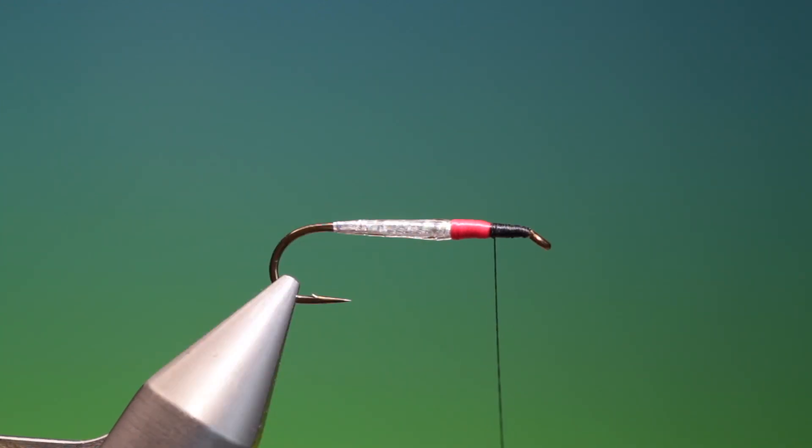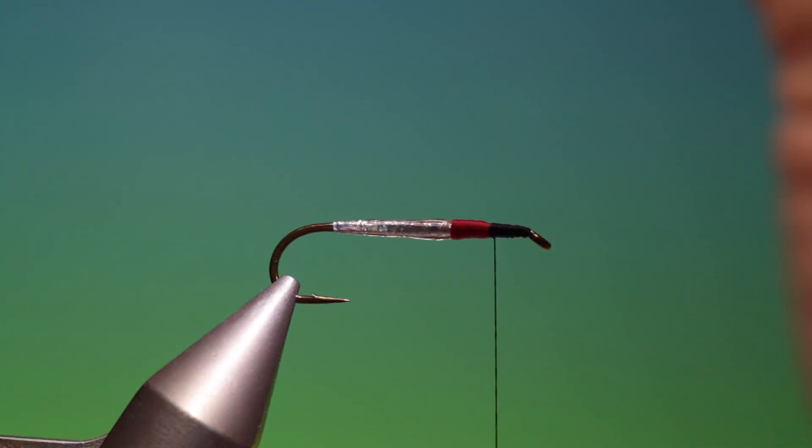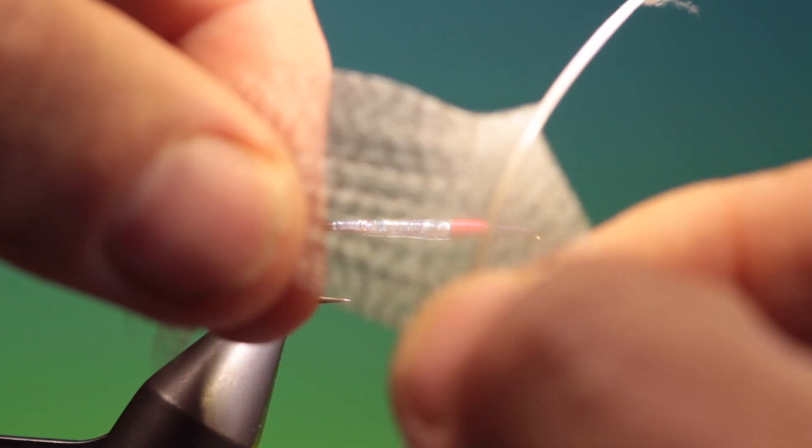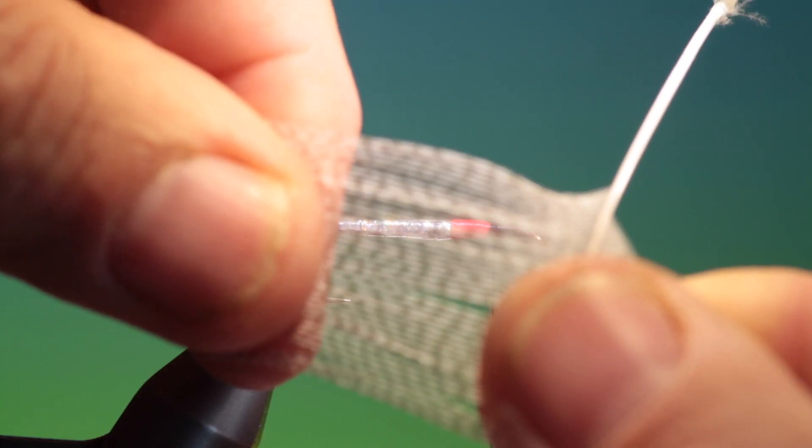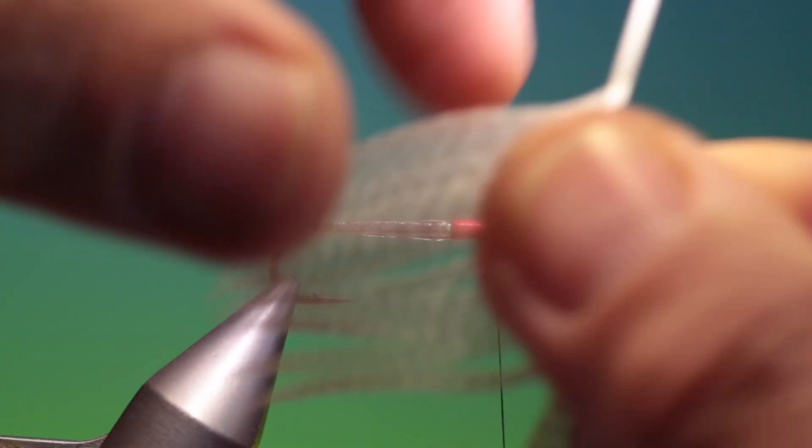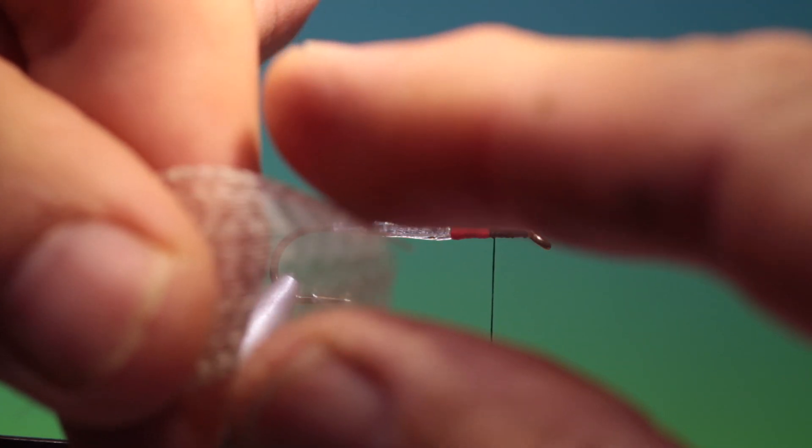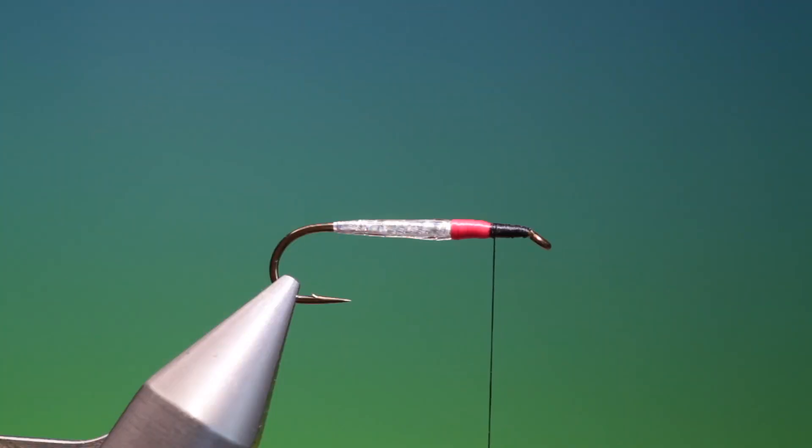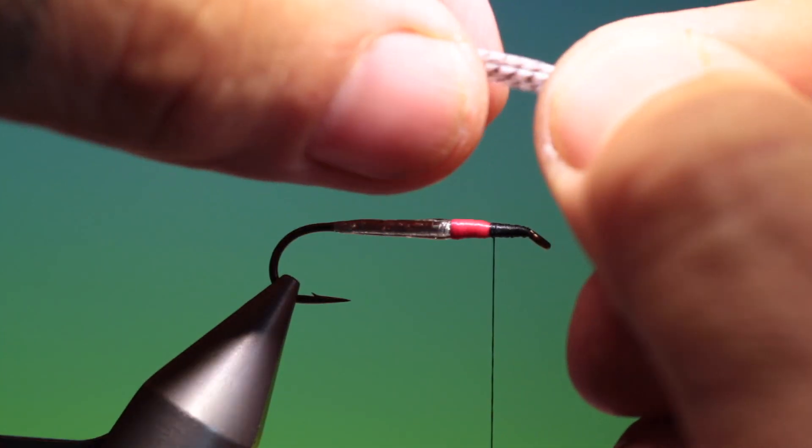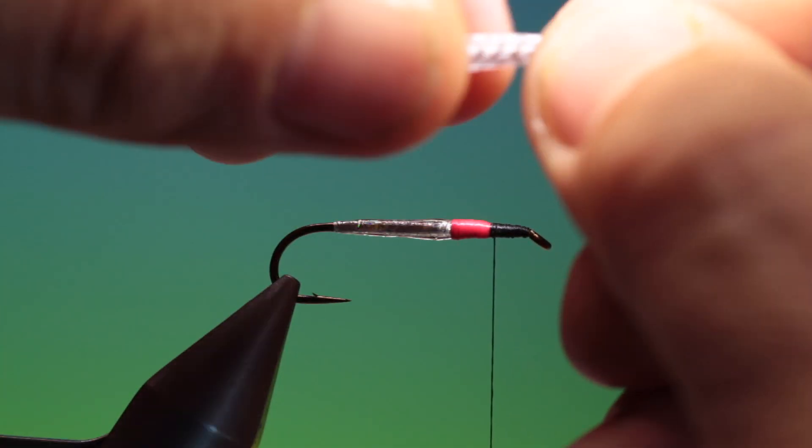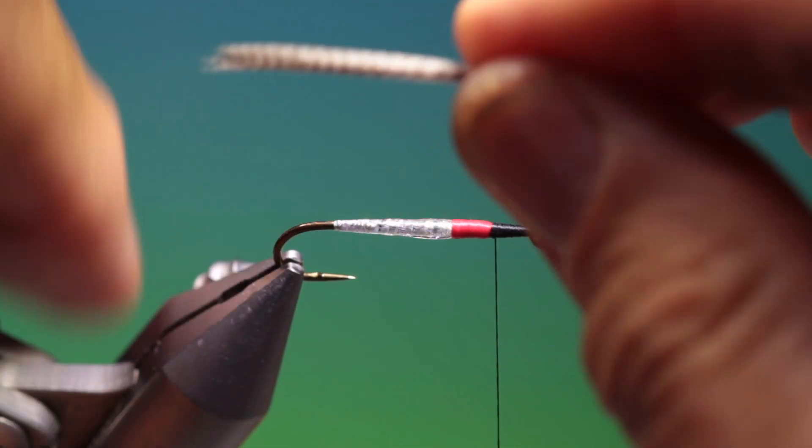Then what we need is a mallard flank. What we do with this is we pull the fibres out like this 90 degrees from the stem. So we level up the tips. Here as much as we can. Then we strip that off and we fold it twice. Then we can just wet our fingers to tame the fibres as much as possible.